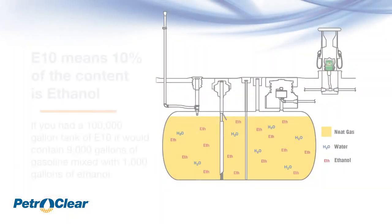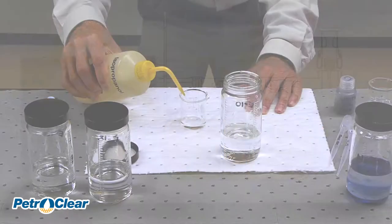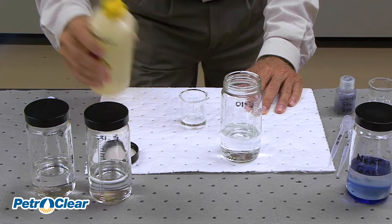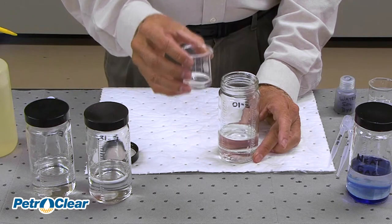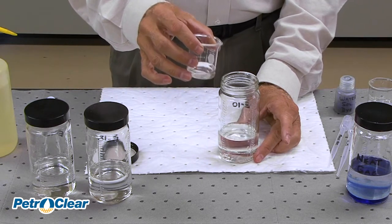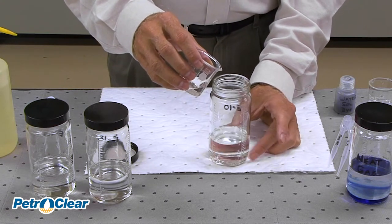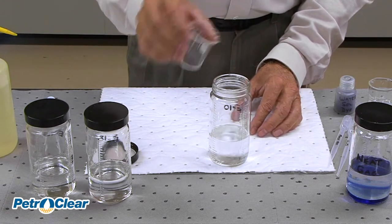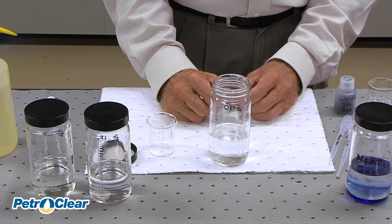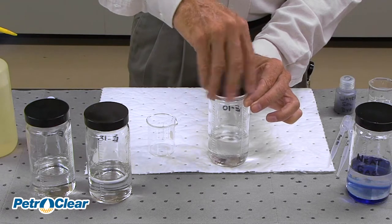Next we'll make a container of E10. It consists of 90% gasoline and 10% alcohol — 90 milliliters of gasoline and 10 milliliters of alcohol. We are using isopropyl alcohol because it is easier to obtain and straight ethanol is illegal. Alcohol and gasoline like each other, so it won't even be necessary to agitate the solution. Watch closely and you will see at first it clouds up but then settles into the solution. Now we have a container of E10.